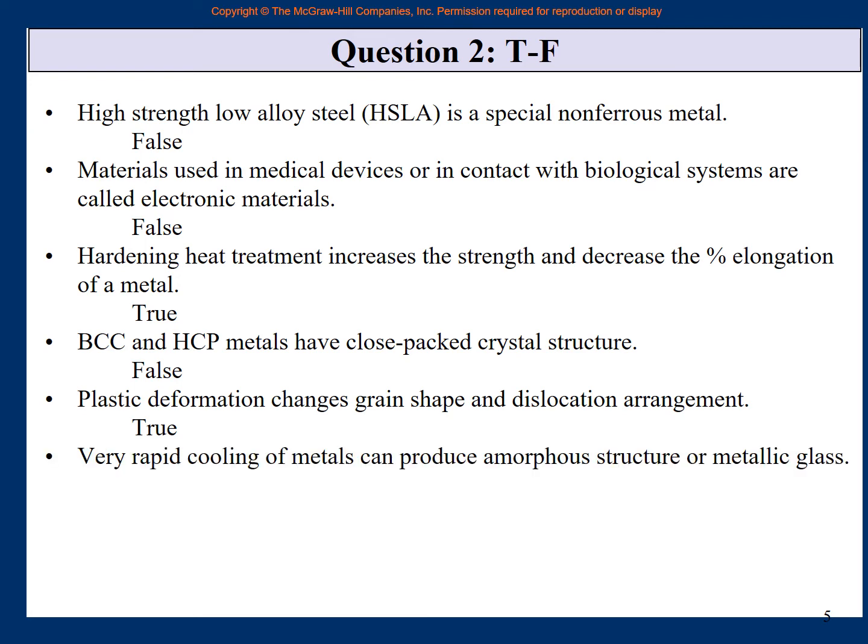Very rapid cooling of metals can produce amorphous structure or metallic glass. Very rapid cooling of metals. So this is towards the very end of the chapter, where we are talking of very special materials that there is a metal. Metals are always crystalline, but there is a metal which will become amorphous, which will become non-crystalline, or you also call it metallic glass. So this is a very special case. And what should be the answer? Yes, true. This is the only technique that you cool the material very, very rapidly, so rapidly that the material does not get the time to form crystals or grains. So it is an amorphous material and it is also called metallic glass.